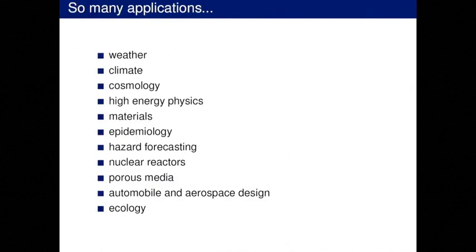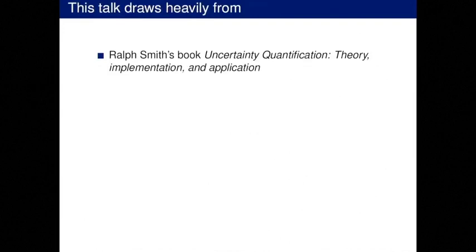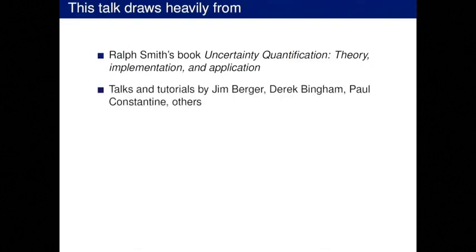What these problems also have in common are expensive computer models. We put a lot of work into understanding the physics or dynamics of the system, and we hope to learn from them, to understand what's going on, to make predictions. That's our goal — how do we work with those expensive computer models? That's the framework here, both from the applied math perspective and from the statistics perspective. This talk draws from Ralph's book, which is really nice, and Ralph and Jim are offering a course this semester.